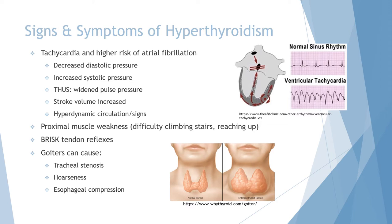Proximal muscles weaken, so reaching up to get something from a shelf or climbing stairs becomes more difficult. Tendon reflexes become brisk, or strongly reactive to stimulus.